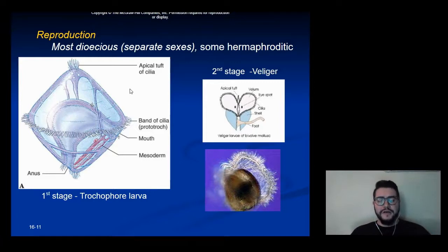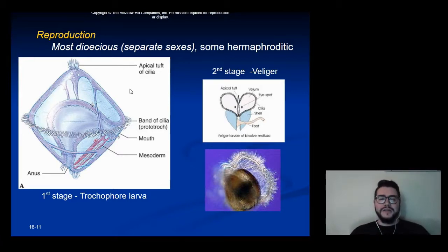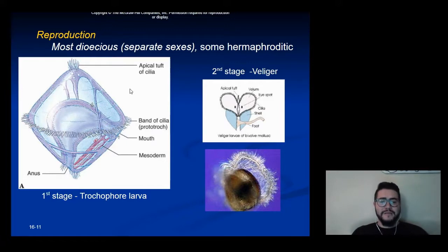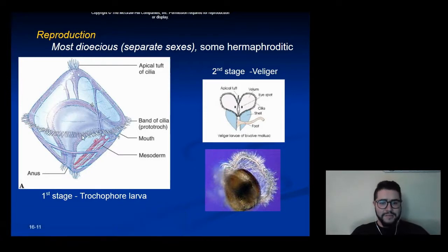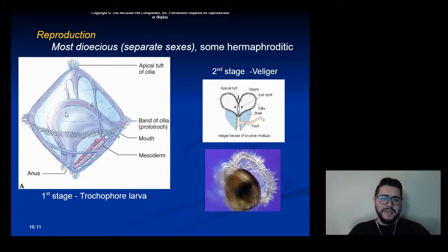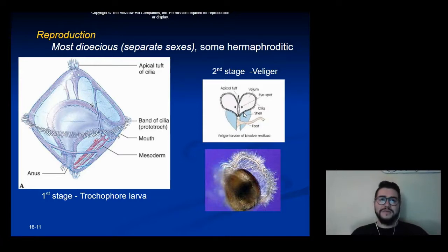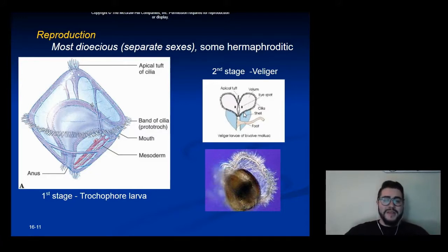Reproduction in molluscs is usually separate sexes, but there are some hermaphroditic organisms as well. Generally, the first stage of the larvae is called a trochophore, which has little ciliated bands around its body to help it move and orient itself. That eventually develops into a second stage called a veliger. The veliger can attach to different organisms — sometimes in freshwater clams it ends up being parasitic until it fully develops into its own organism.